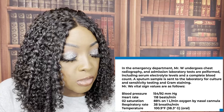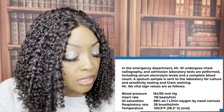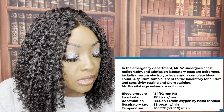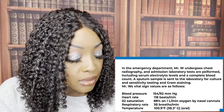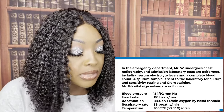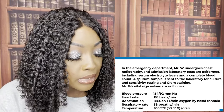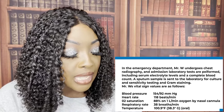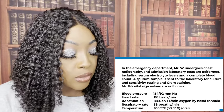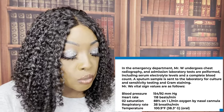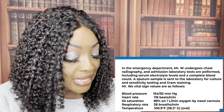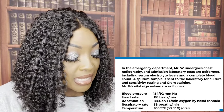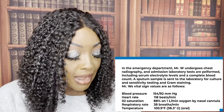In the emergency department, Mr. W undergoes chest radiography, and admission laboratory tests are performed including serum electrolyte levels and complete blood count. A sputum sample is sent to the lab for culture and sensitivity testing and gram staining. Mr. W's vital signs are as follows: blood pressure 154 over 92, heart rate 118, O2 sat 88% on one liter, respiratory rate 38 breaths per minute, and temperature 100.9.